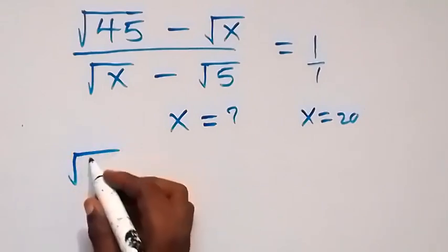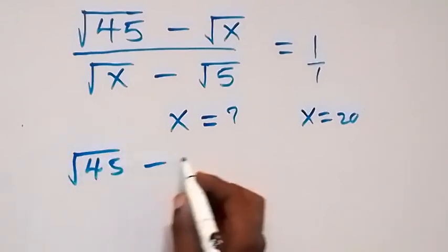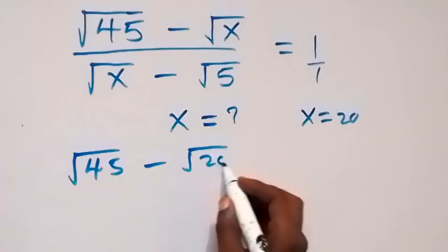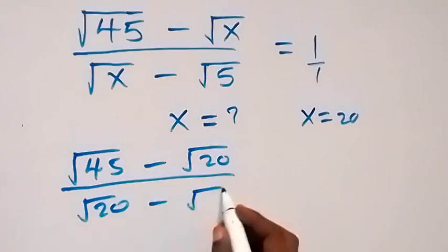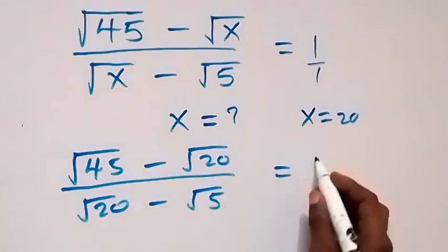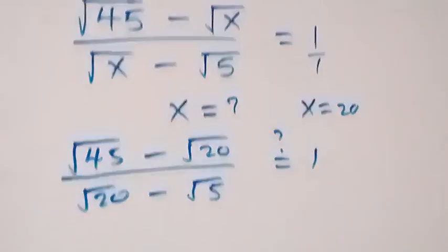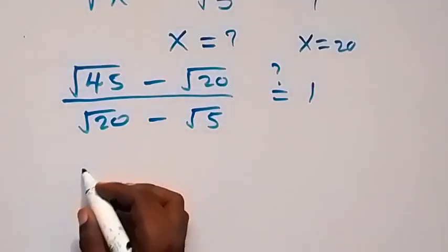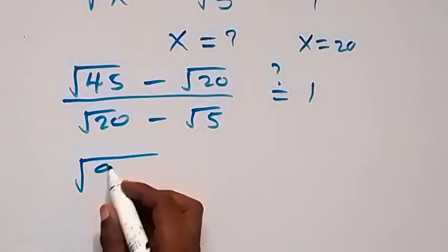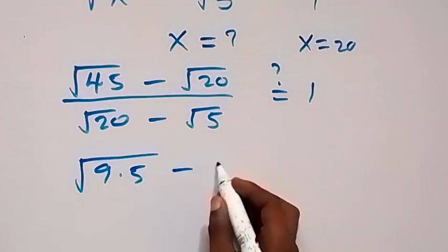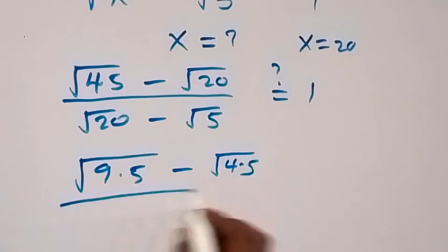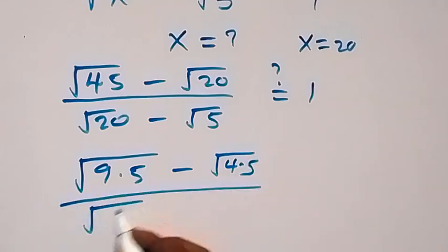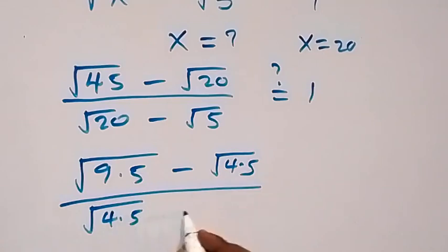Substituting x equals 20: we get root 45 minus root 20, divided by root 20 minus root 5. Simplifying: root 45 is root 9 times 5, and root 20 is root 4 times 5.